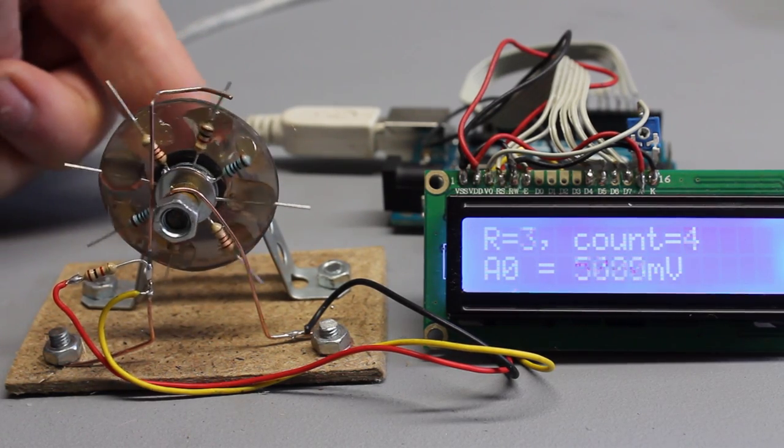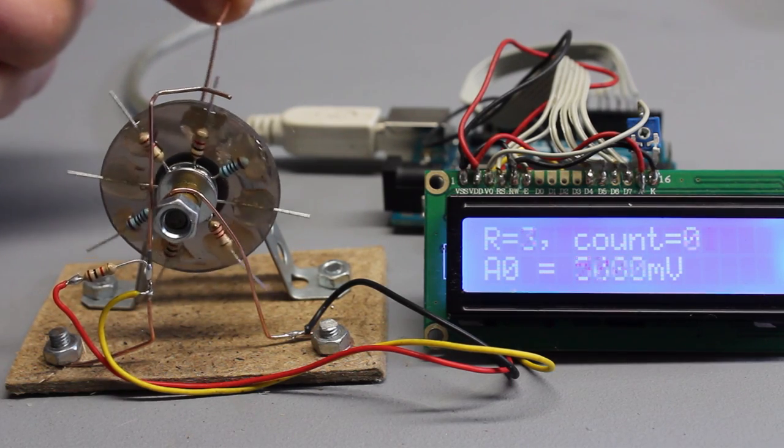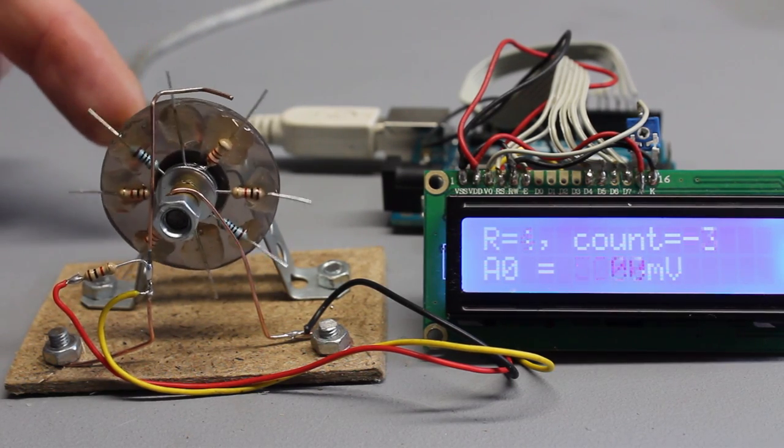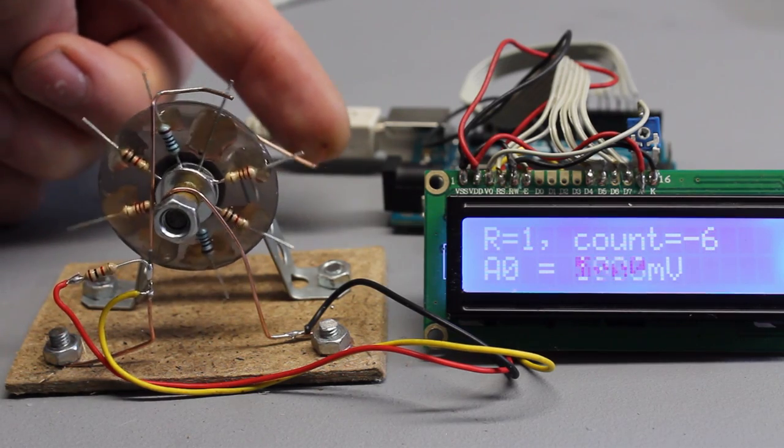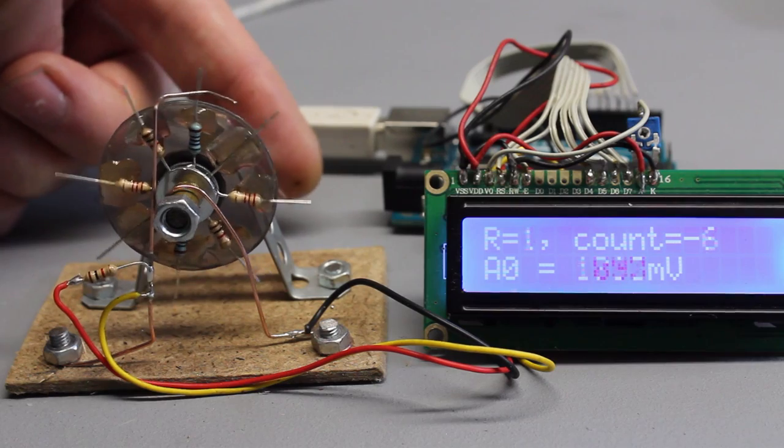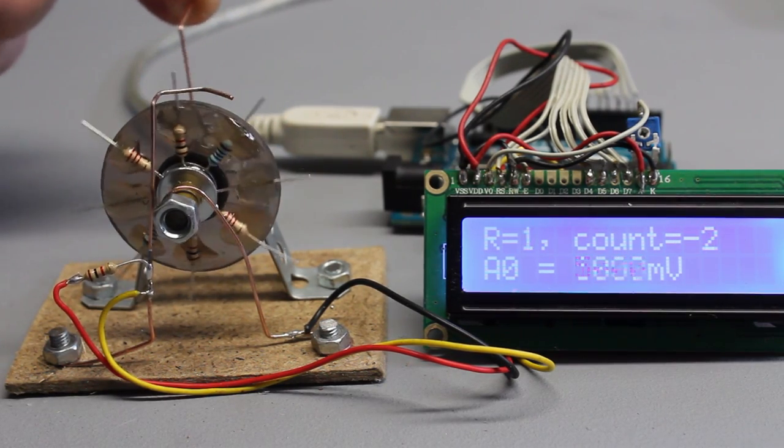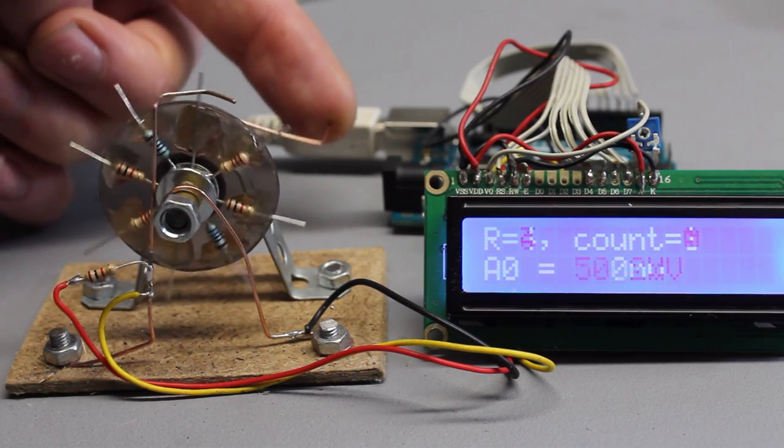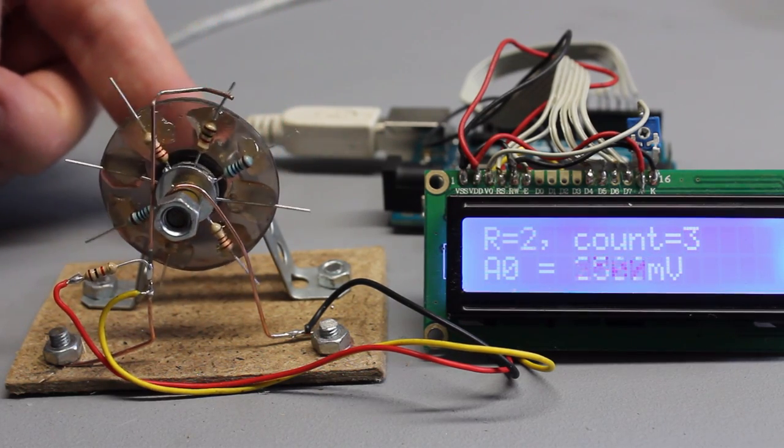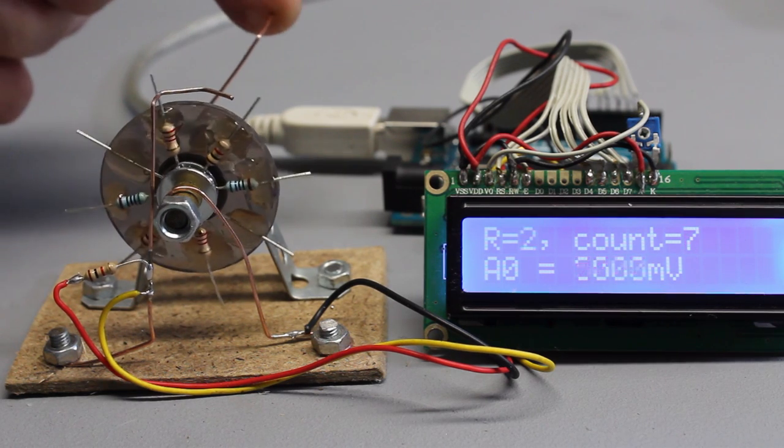This rotary encoder is simple to build, the working principle is visible and it is a device that can be used to teach some base knowledge about voltage dividers. Another advantage is that only one input pin is needed to read the encoder by a microcontroller. I will do some experiments in how to use this sensor in a control circuit soon. Thanks for watching and I'll be back.